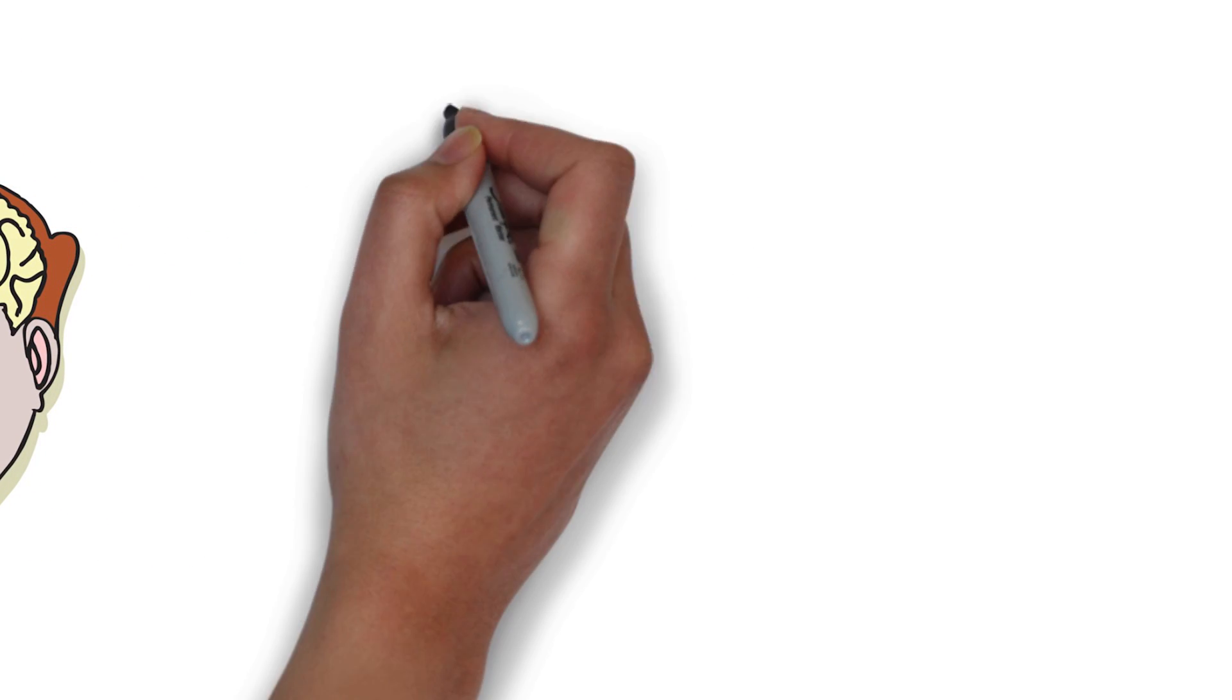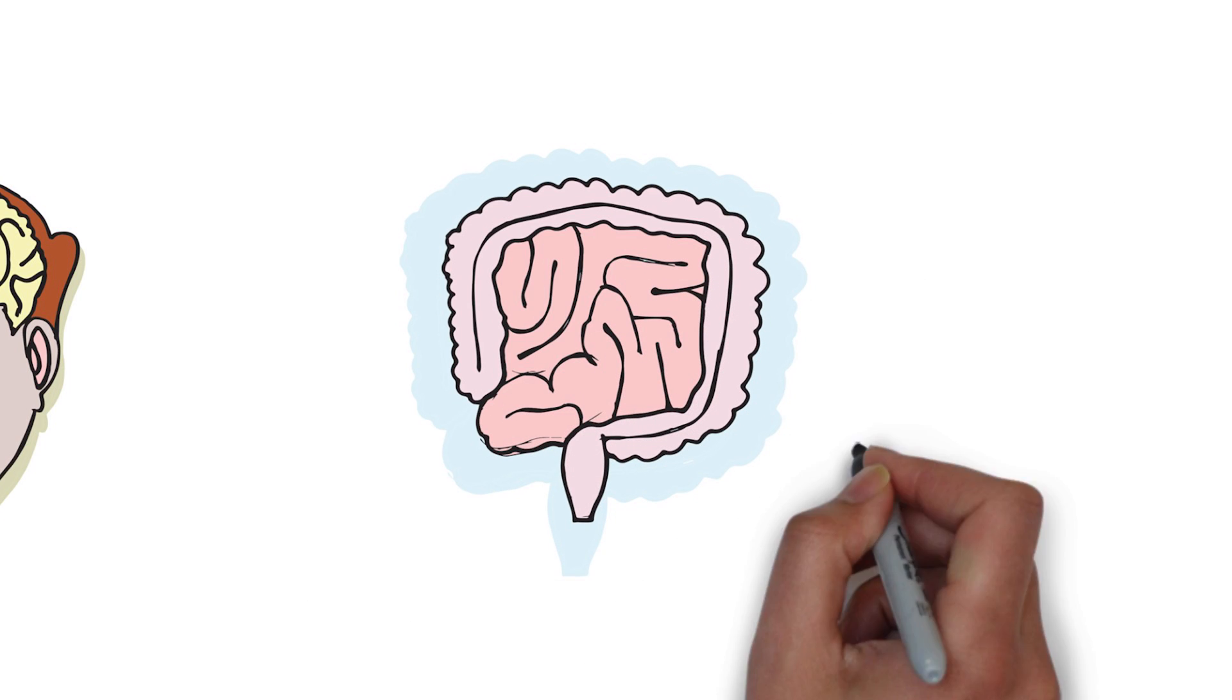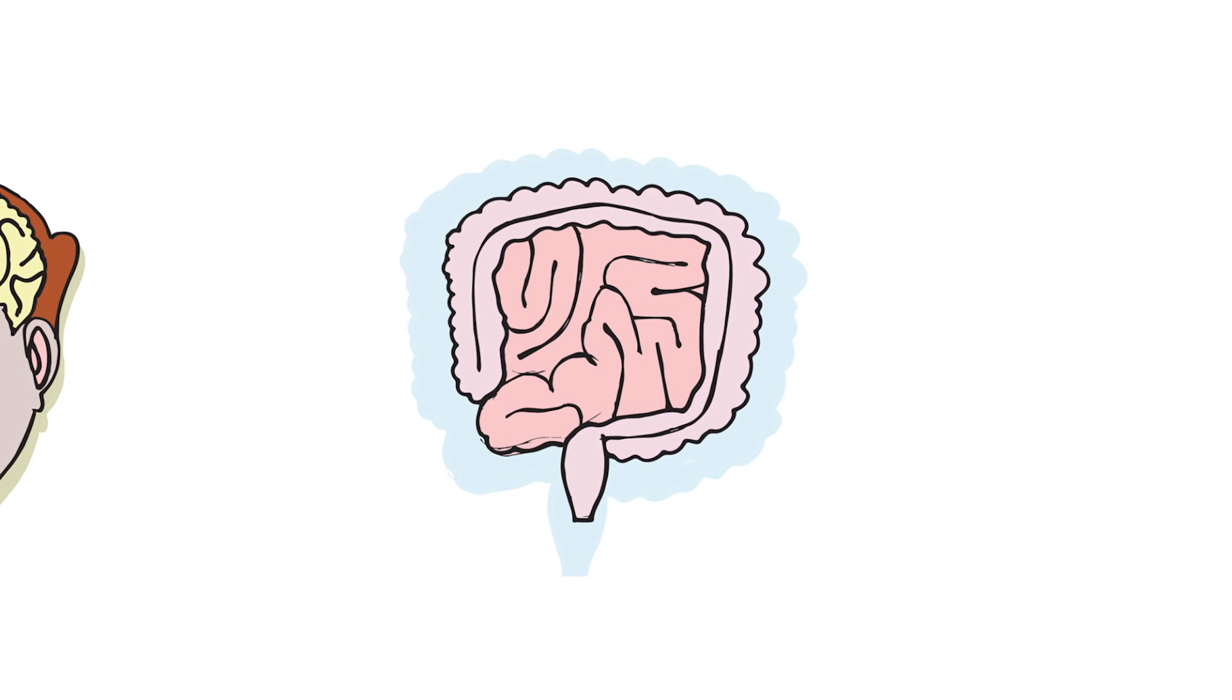Something similar may be happening in the gut, which is also home to alpha-synuclein. Like the nose, these proteins have a direct route to the brain via one of the longest nerves in the body.